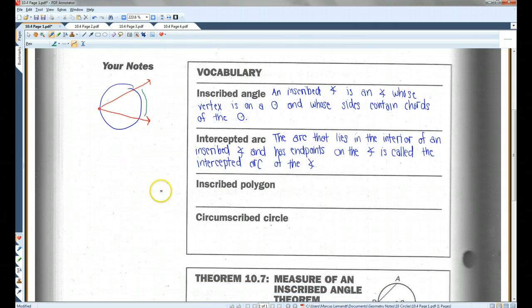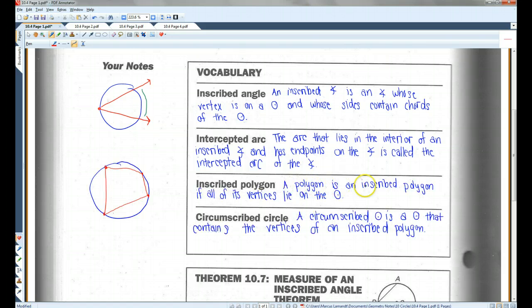Inscribed polygon and circumscribed circle, I'm going to do those two together. A polygon is an inscribed polygon if all of its vertices lie on the circle. So this quadrilateral here would be an inscribed quadrilateral. It doesn't have to be a four-sided figure. It could have as many sides as you want. As long as all of its vertices are actually on the circle, it's an inscribed polygon. A circumscribed circle is a circle that contains the vertices of an inscribed polygon. So this circle, because it contains an inscribed polygon, would be a circumscribed circle.